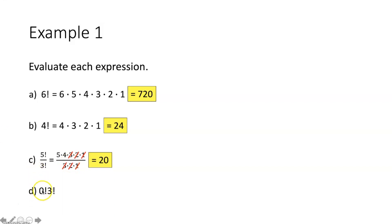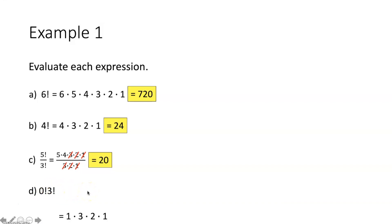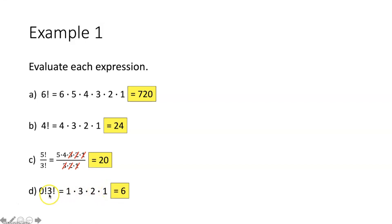Part D — zero factorial times three factorial. Zero factorial is the special case equal to one. Three factorial is three times two times one equals six. So one times six gives zero factorial times three factorial equals six.